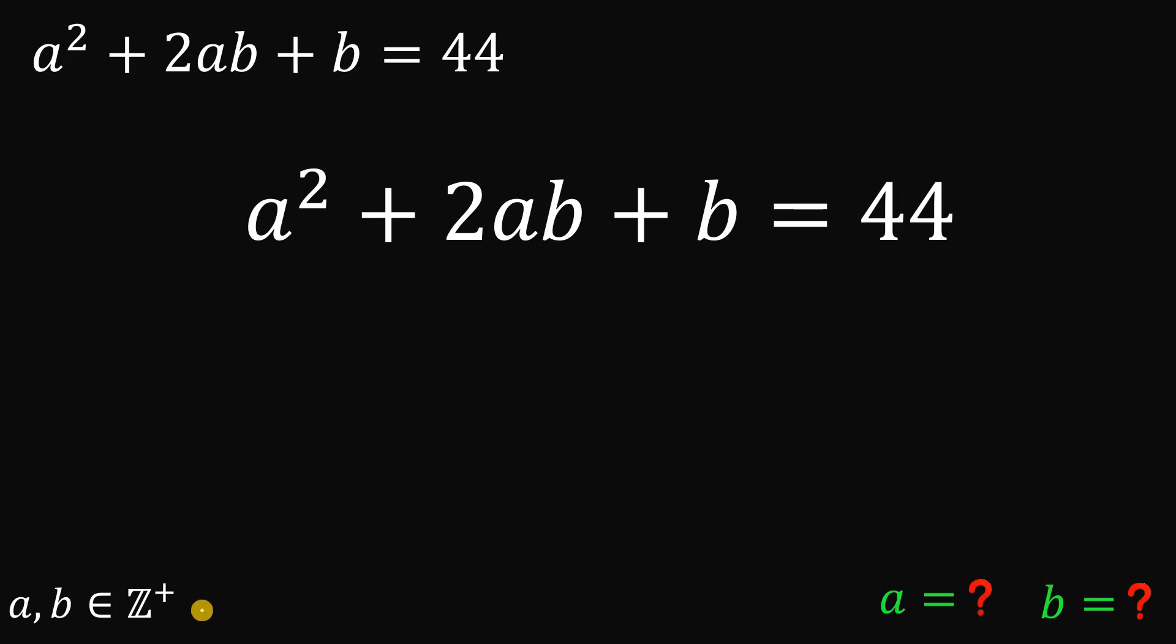This is solvable because a and b are both positive integers. Otherwise, if a and b are real numbers, then we have infinitely many solutions. To answer this, first we will focus on the left-hand side of our equation because the goal is to completely factor this expression. But the question is how do we factor this expression?